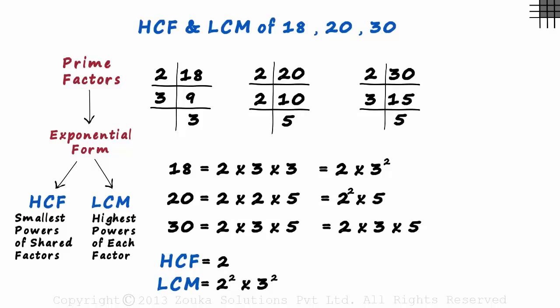And the last factor is 5. We have 5 raised to 1 here as well as here, so we multiply this with 5 as its highest power. This is 4 multiplied by 9 multiplied by 5, that equals 180.